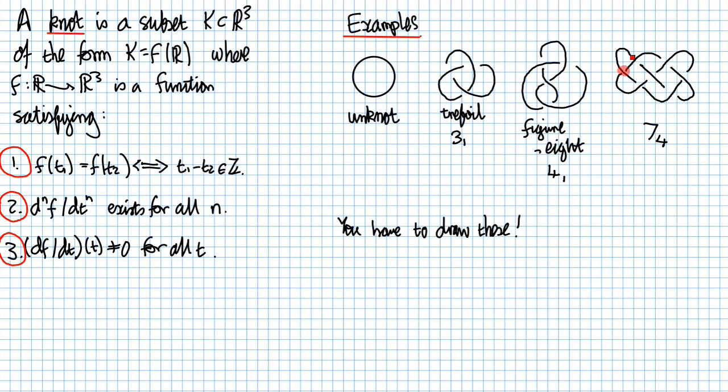So here in 7-4 we have 1, 2, 3, 4, 5, 6, 7 crossings, hence the name 7-4. In the figure 8 there are 1, 2, 3, 4 crossings, and in the trefoil there are 1, 2, 3 crossings.